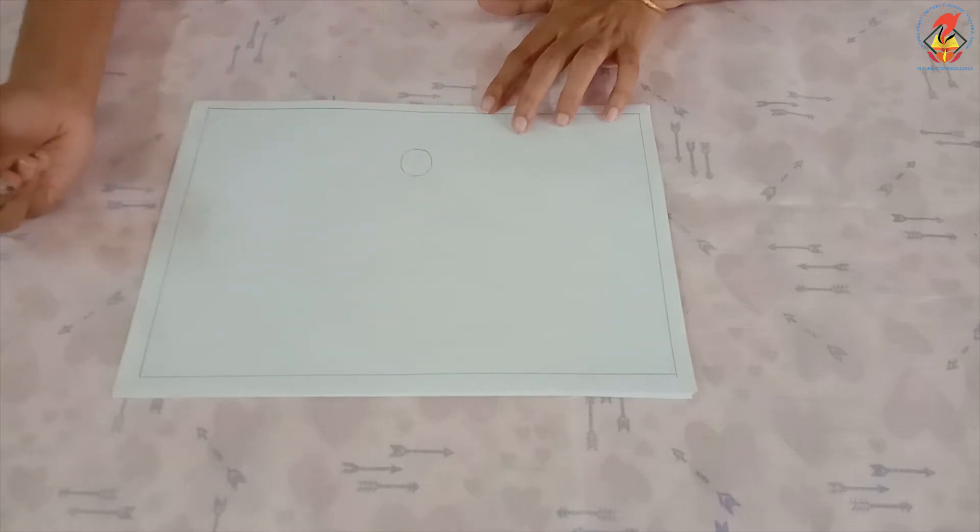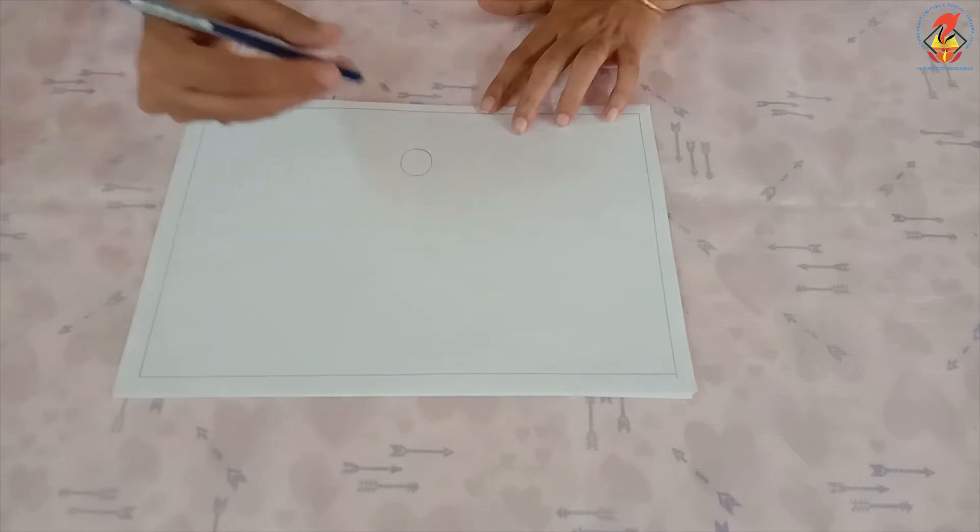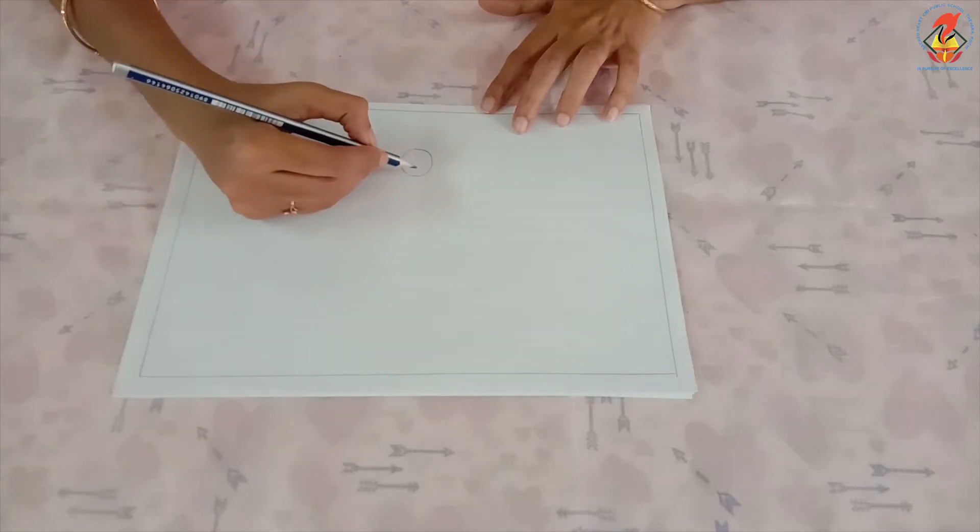Then draw the body. For that, draw an oval shape going down from the circle.